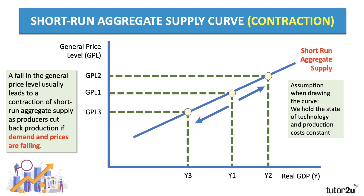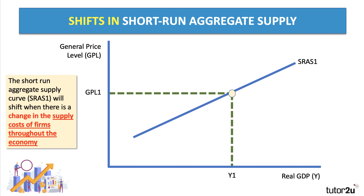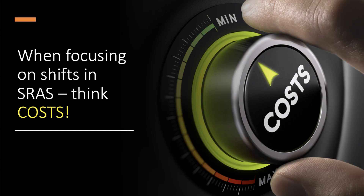A fall in the general price level usually leads to a contraction of short-run supply. Don't forget that when we draw the short-run aggregate supply curve, we're making an assumption that the state of technology, production costs, and productivity are constant. When those change, the supply curve will shift position. The short-run aggregate supply curve SRAS1 will shift when there is a change in supply costs of firms throughout the economy. When focusing on shifts in aggregate supply, focus on cost of production — and in particular, the unit costs of getting goods and services to consumers across different markets.